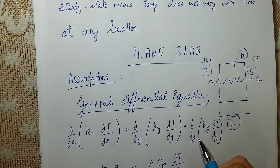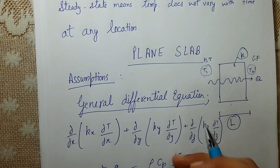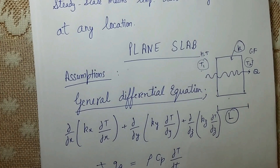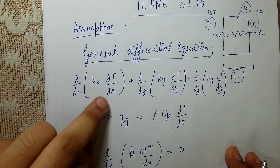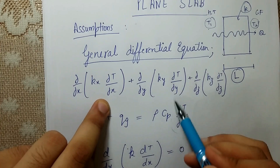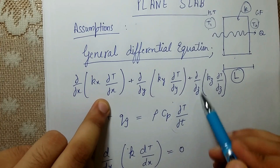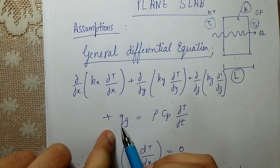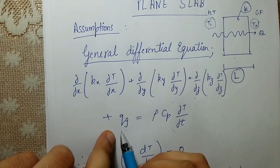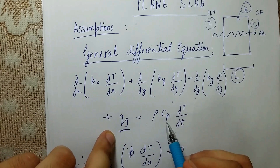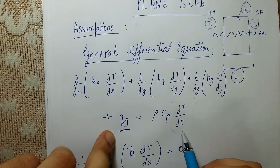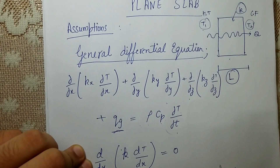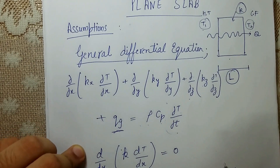Now let's look at the general differential equation in Cartesian coordinates: (∂/∂x)(Kx · ∂T/∂x) + (∂/∂y)(Ky · ∂T/∂y) + (∂/∂z)(Kz · ∂T/∂z) + q_g = ρ·Cp·(∂T/∂t). Based on our assumptions we will now simplify this equation.